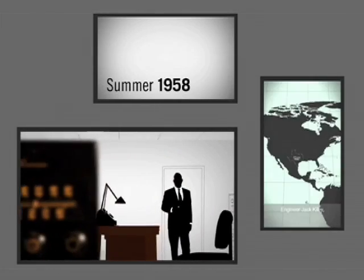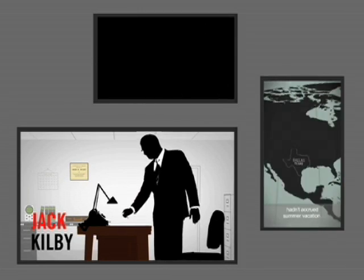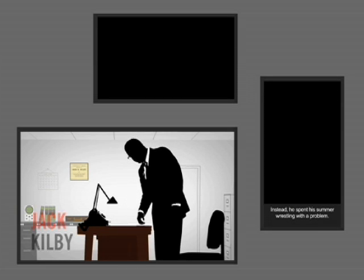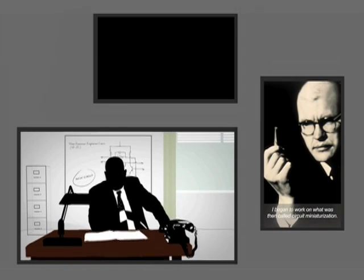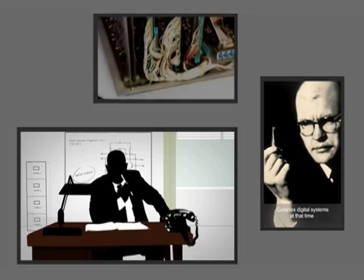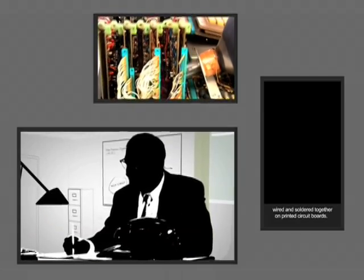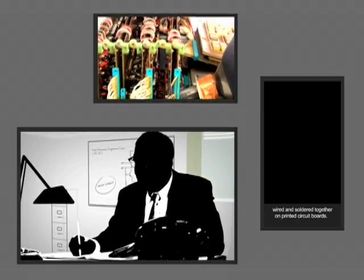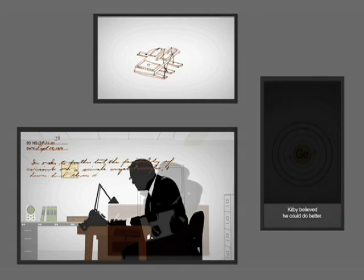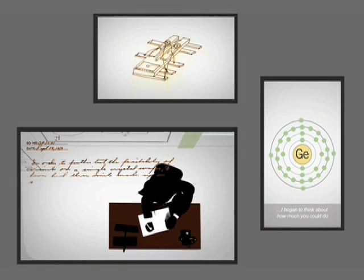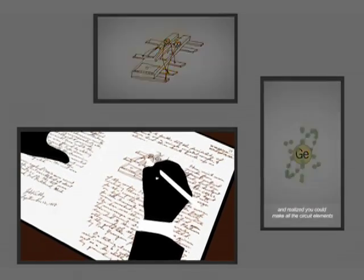Summer 1958. Engineer Jack Kilby, new at his job with Texas Instruments, hadn't accrued summer vacation. Instead, he spent his summer wrestling with a problem. He began to work on what was then called circuit miniaturization. Complex digital systems at that time required thousands of separate parts wired and soldered together on printed circuit boards, but they failed often. Kilby believed he could do better. He began to think about how much you could do with semiconductors and realized that you could make all the circuit elements that you needed.